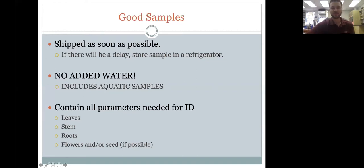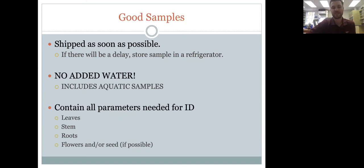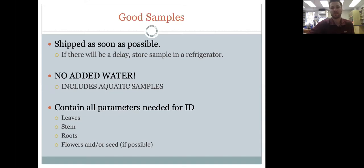Ship samples as soon as possible. If you're collecting on a Thursday or Friday, it's usually better to wait until the following week so it doesn't sit over a weekend. Don't add water — even aquatic samples don't need to be shipped in water; let them dry on paper towels. Collect everything you can from the plant: leaves, stems, flowers, and seed heads are all extremely helpful.